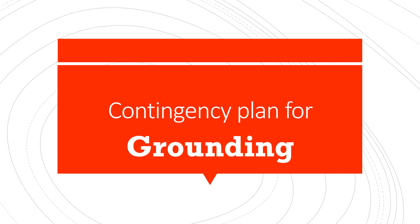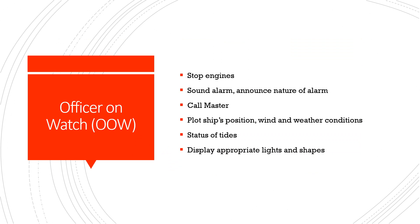How would you prepare a contingency plan for the shipboard emergency of grounding? In preparing a contingency plan, I will show you an example on how duties may be allocated to the respective ranks on board in the emergency of grounding. Just use this as an example for an emergency and you may adapt for other emergencies as well. In the case of grounding, an officer on watch may have the following duties.